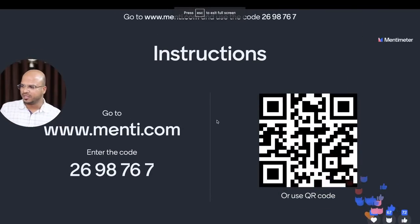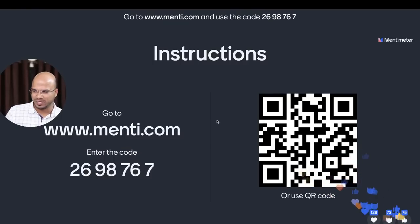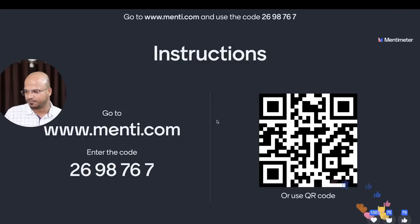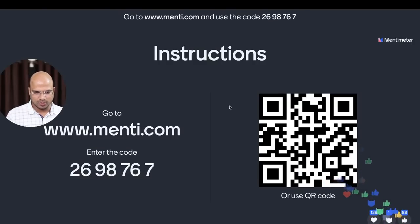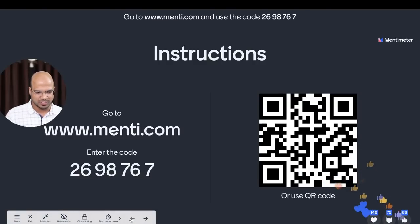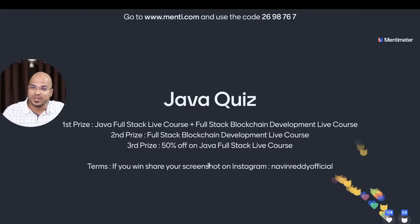Today's Mentimeter is based on the topic we did last time — in fact it is based on the entire week. There are 80 questions on loops and then 20 questions from other topics we have done. You can scan the QR code from your mobile phone and join. I also want to talk about the terms and the prizes for today. This is a Java quiz.